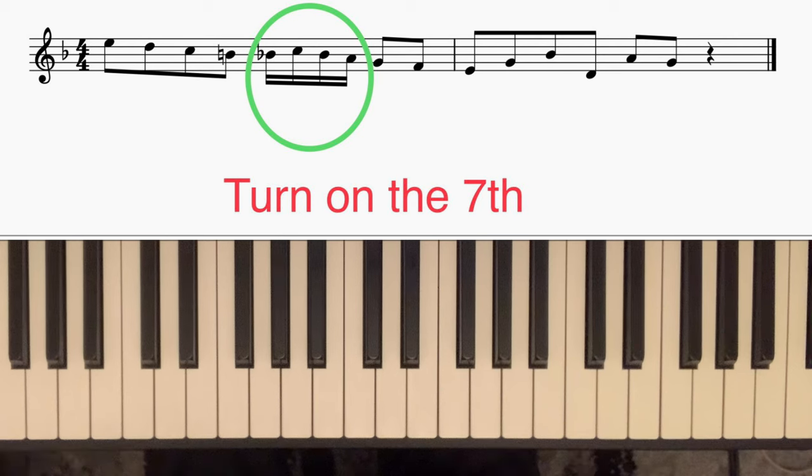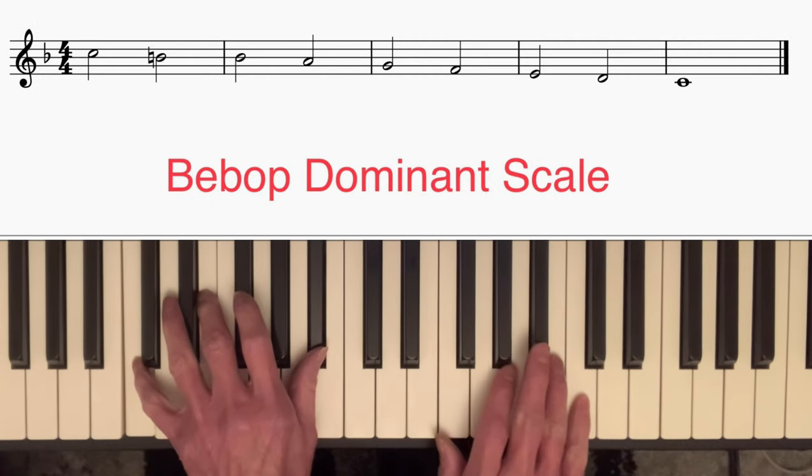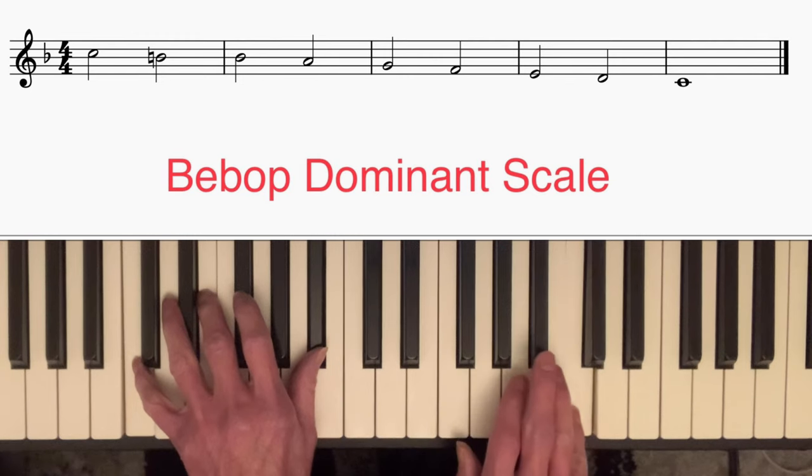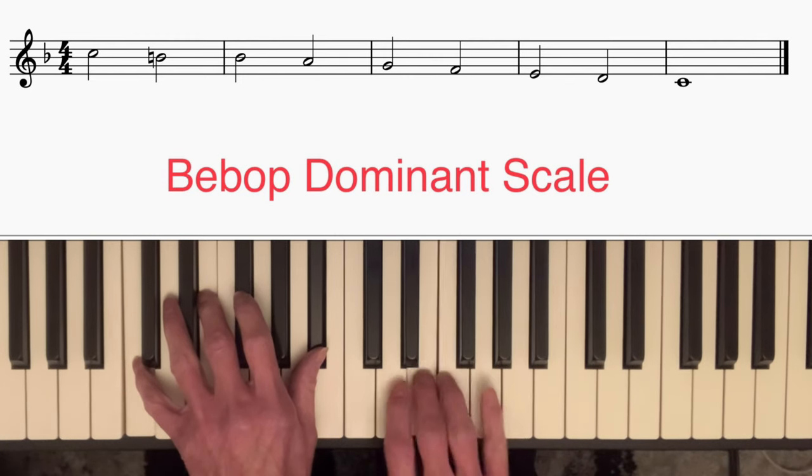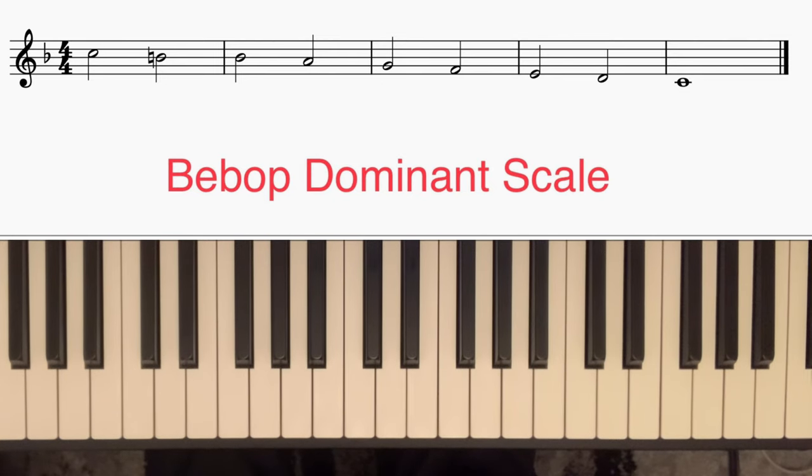So this is usually done when you're playing a descending bebop scale. Let's just recap. On a C7 chord, a descending bebop scale would be this one. It's basically a mixolydian mode with one added passing note. The B comes between the root and the seventh.